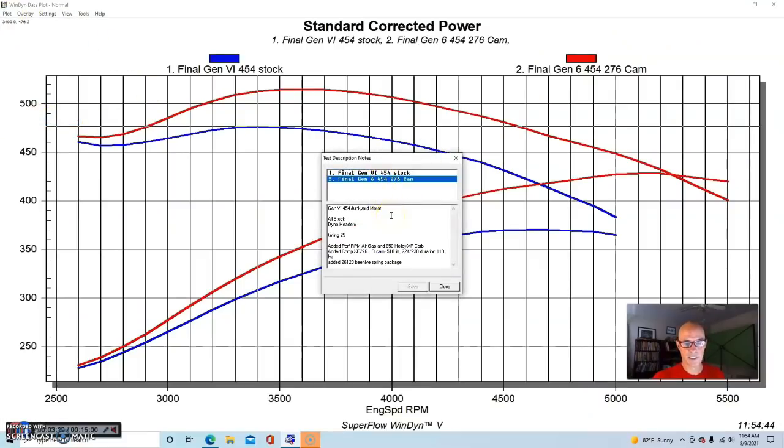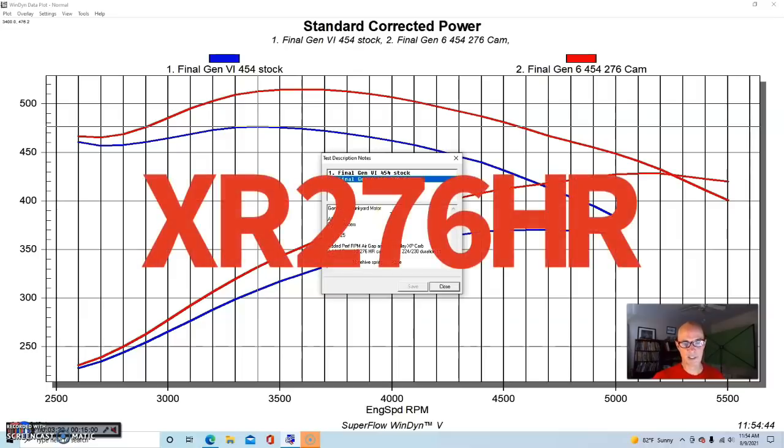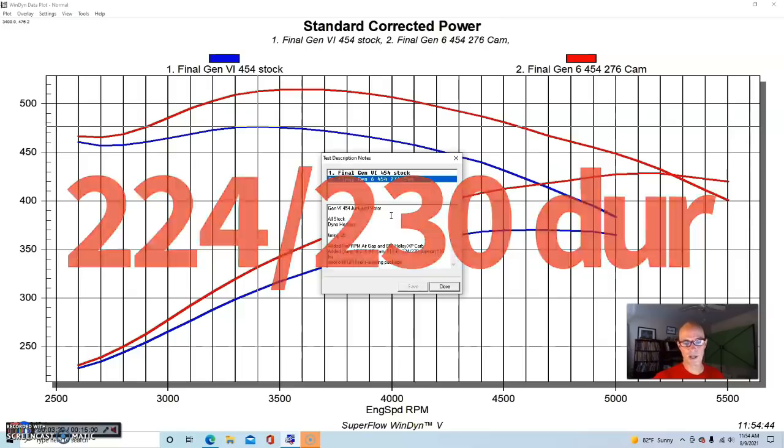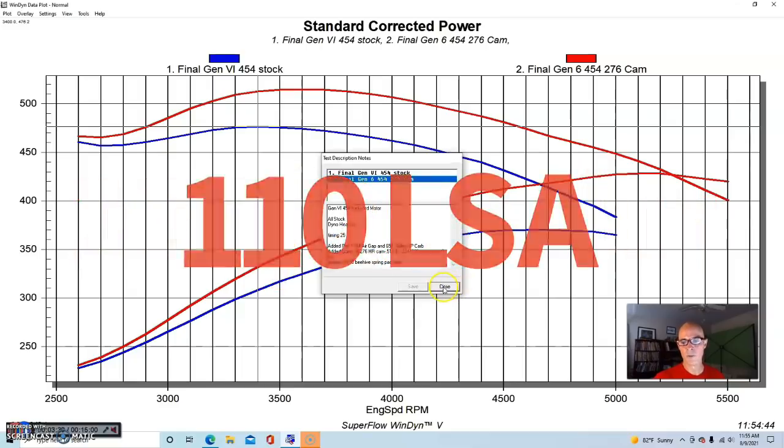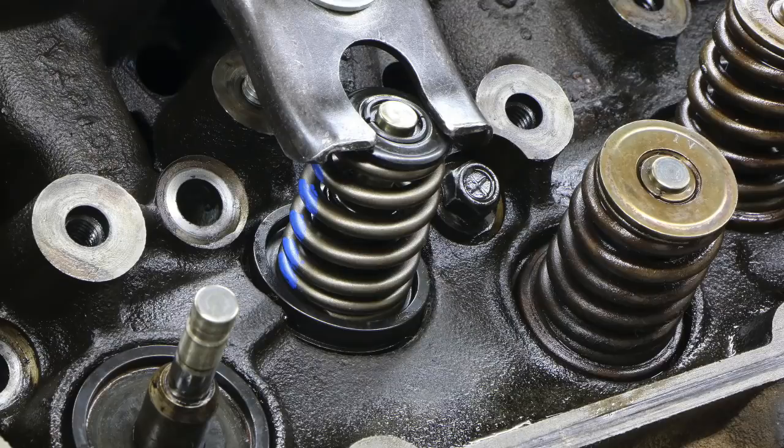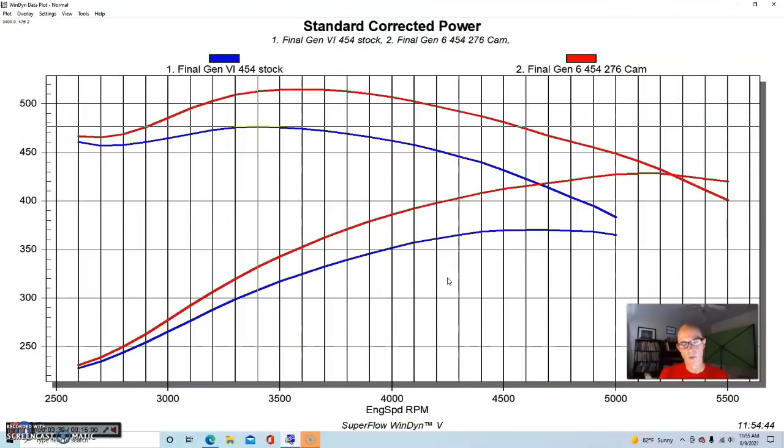It was an XC-276 HR. It had 510 lift, a 224-230 degree duration, and 110 degree lobe separation angle. In order to run this cam we also had to upgrade the valve train, so we had to put a valve spring upgrade which required removal of the factory springs and doing a spring upgrade so that we could have enough valve spring for the available lift.